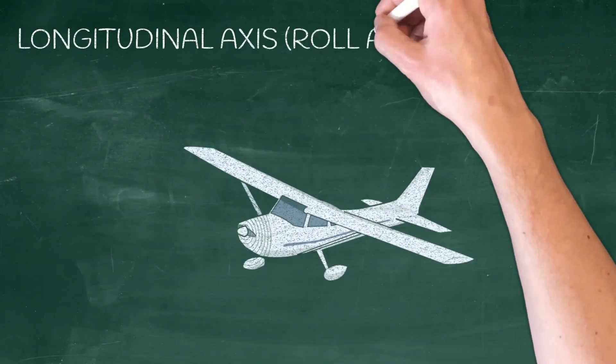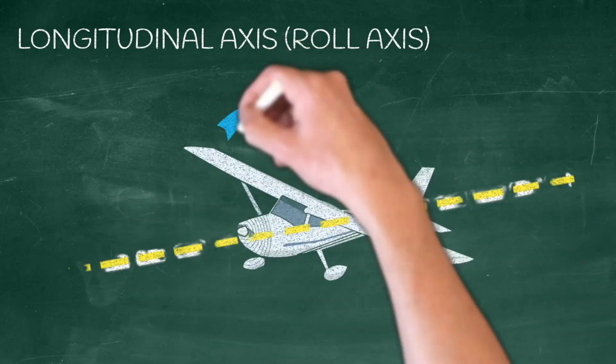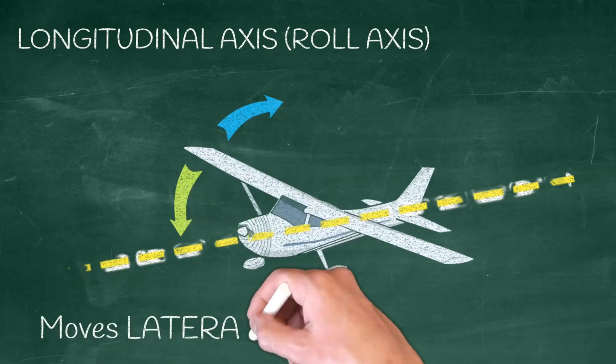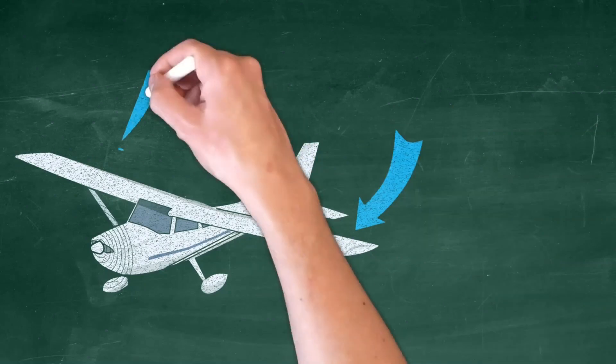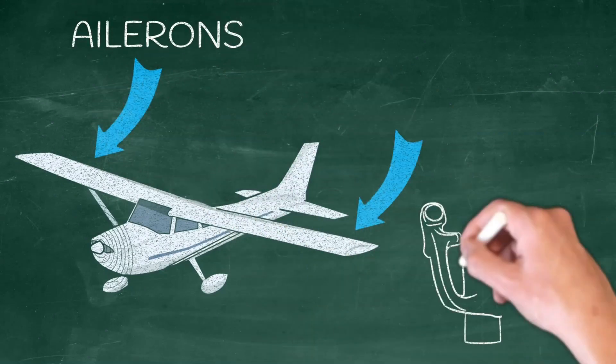The next way an airplane can move is on its longitudinal or roll axis. You'll want to remember that on the longitudinal axis the airplane rolls laterally. You can roll the airplane on its longitudinal axis by using ailerons. We'll use the yoke to make these control inputs too.